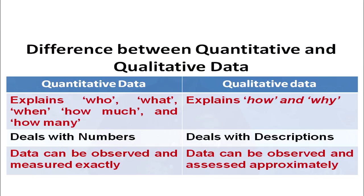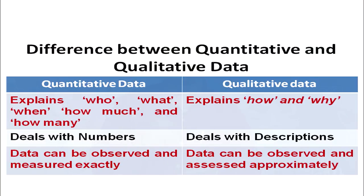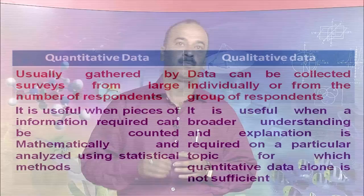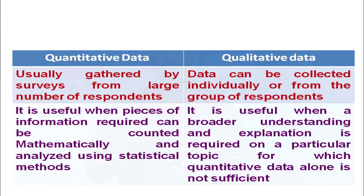Quantitative data can be measured and observed exactly — data in the form of numbers, scores, or marks can be measured accurately. Whereas qualitative data can be observed and assessed only approximately, because opinions and views can change over a period of time. But quantitative data in the form of numbers remains the same. Quantitative data is usually gathered by surveys from large numbers of respondents, whereas qualitative data can be collected individually or from a small group of respondents. Quantitative data is thus voluminous in nature.